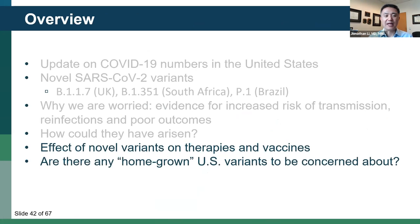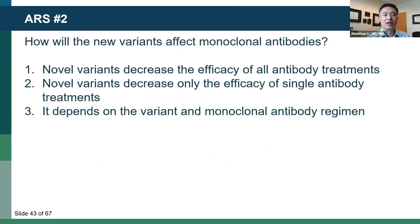We've talked about COVID numbers, the new variants, why we're worried, and how these cases might have arisen. Let's go to our last section: the effect of novel variants on therapies and vaccines, and whether there are any homegrown US variants to be concerned about. That brings us to our second audience response survey. How will the new variants affect monoclonal antibodies? Will they decrease the efficacy of all antibody treatments? Will they decrease only the efficacy of single antibody treatments? Or does it depend on the variant and the monoclonal antibody treatment? Please vote now.